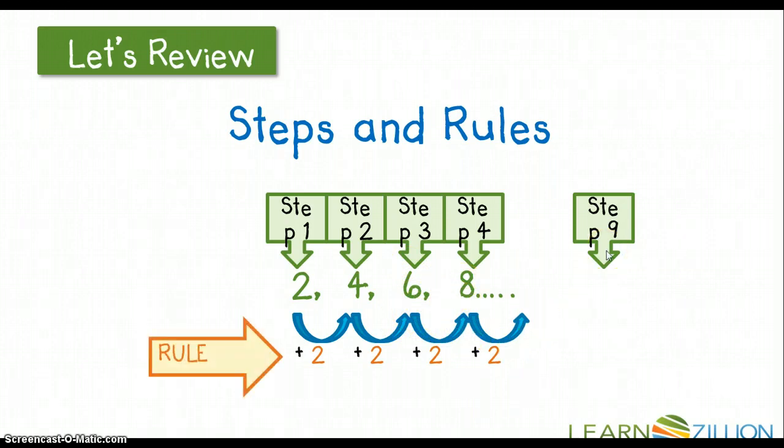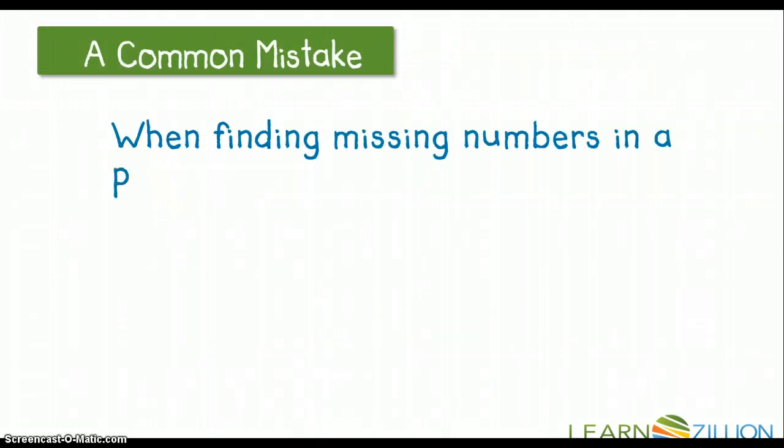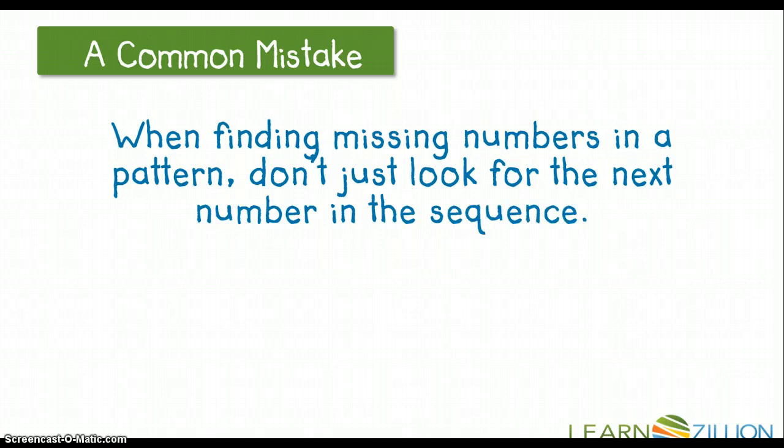But a common mistake is when finding missing numbers in a pattern, you don't just look for the next number in the sequence. When we have 3, 6, 9, 12, we're adding by 3. And we don't just want to look for that next number in the sequence. So we want to keep going.